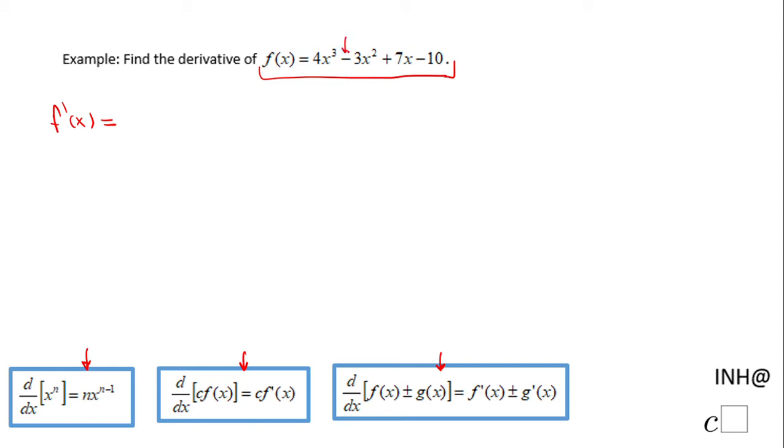Since we have all kinds of things like subtraction and addition and again subtraction, we're going to use this last rule, the sum or difference rule, which tells us we can do the derivative with respect to x of 4x³ plus the derivative, in fact minus, with respect to x of 3x².